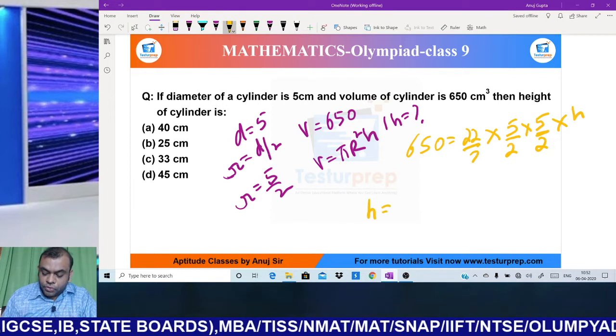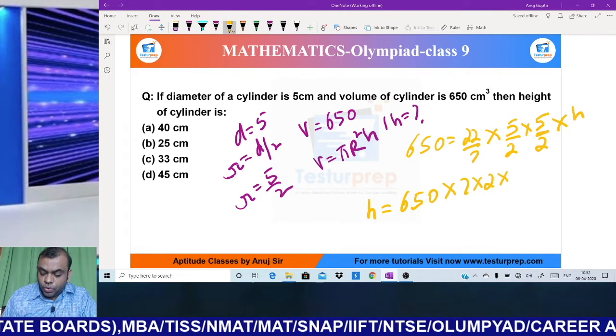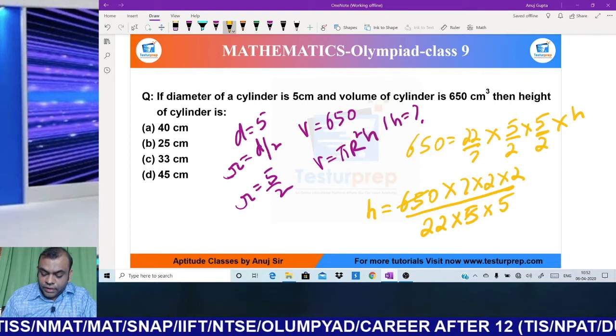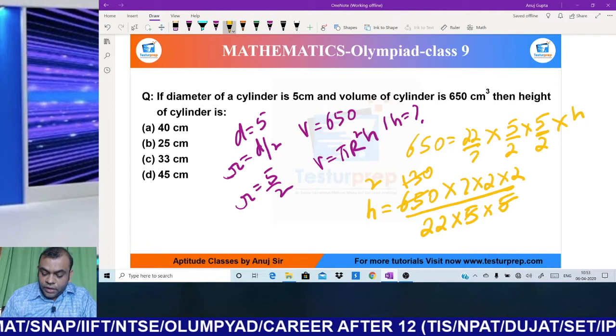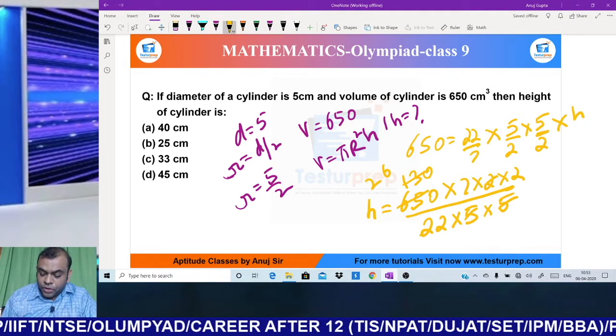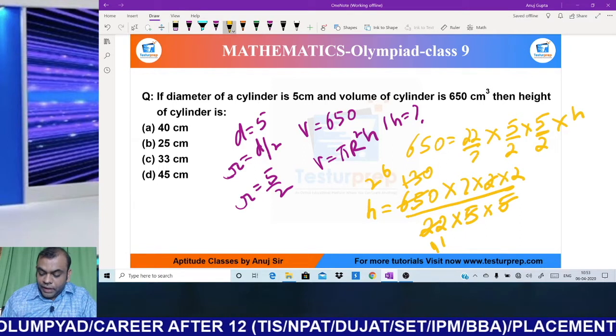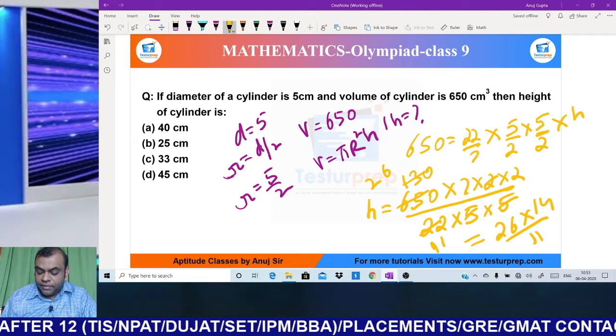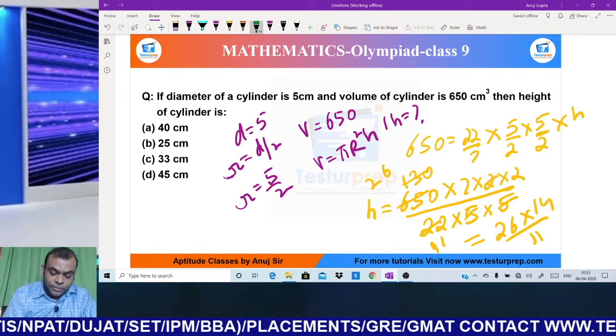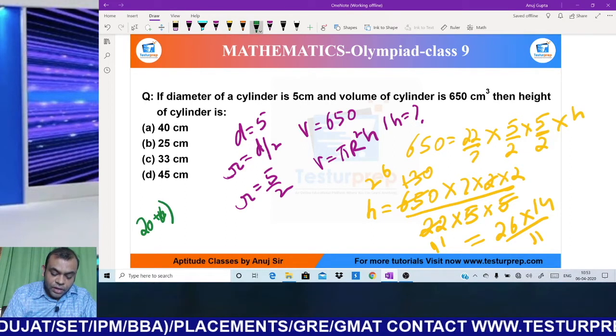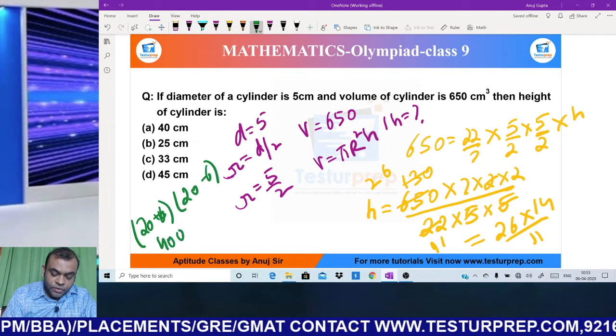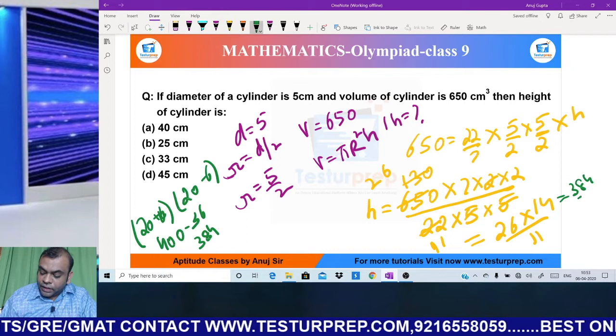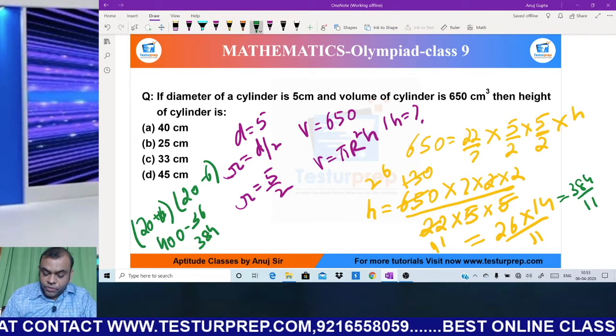Height will become, if we cross multiply: 650 × 7 × 2 × 2 divided by 22 × 5 × 5. Let us solve this - cancelling terms, this becomes 26 × 14 divided by 11. So 26 × 14 using Vedic maths, that is 20+6 into 20-6, becomes 400 - 36 = 384.